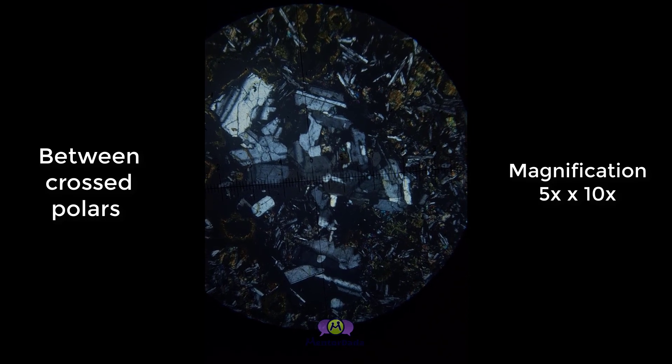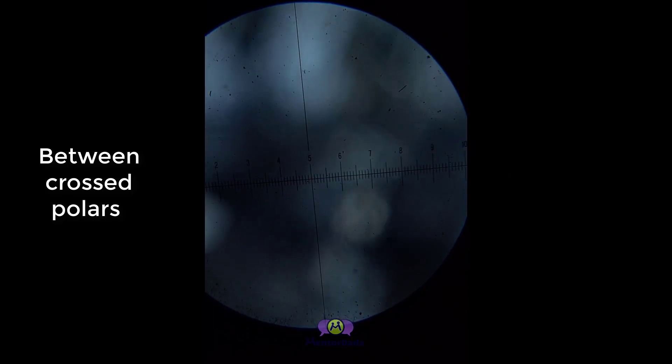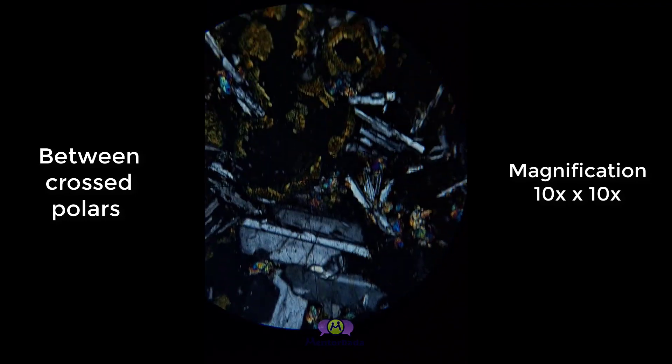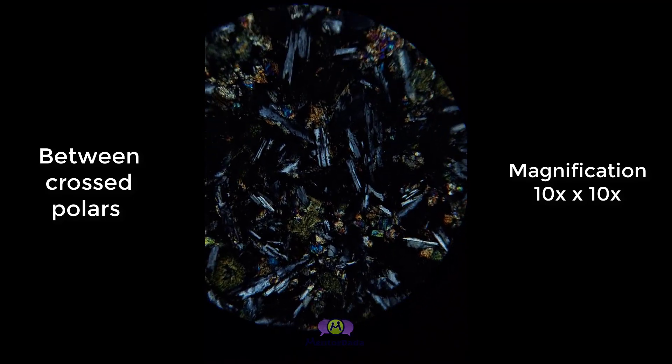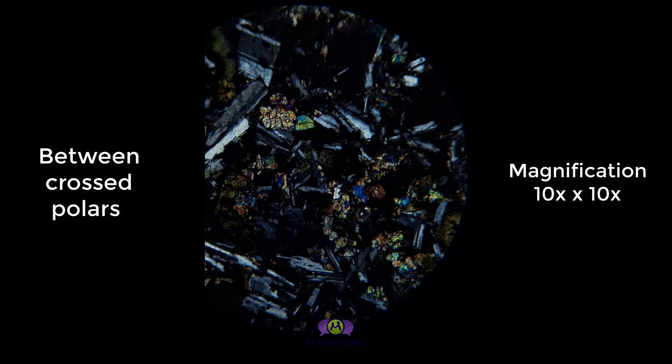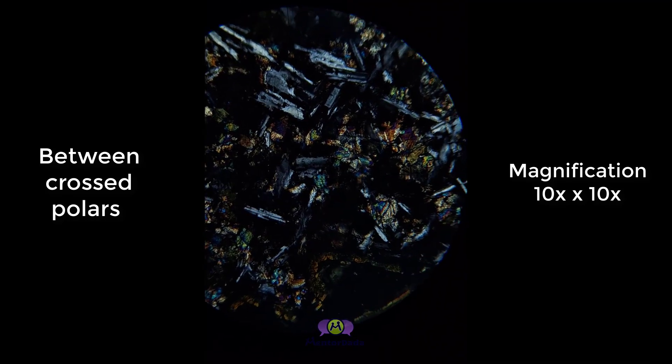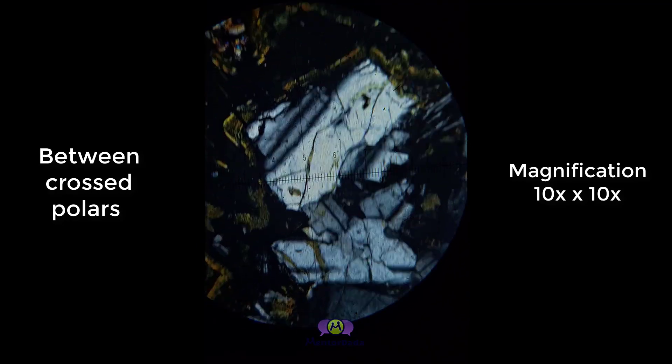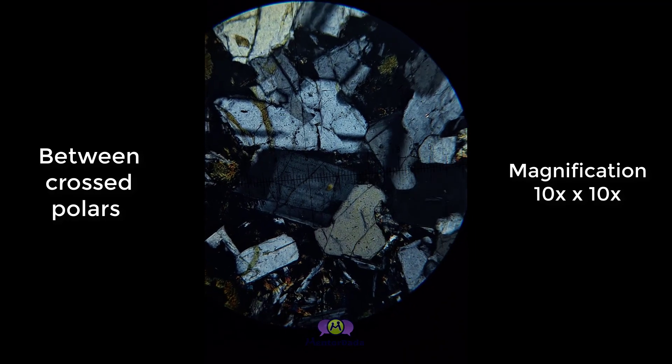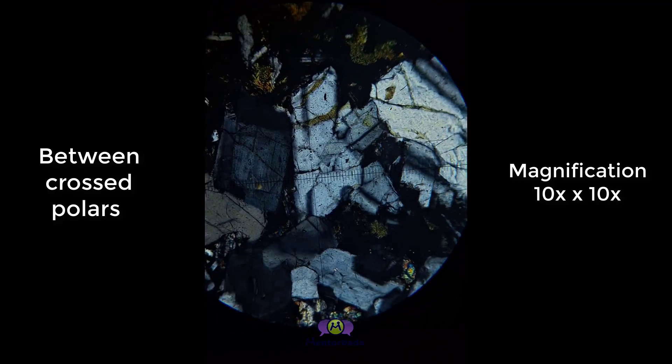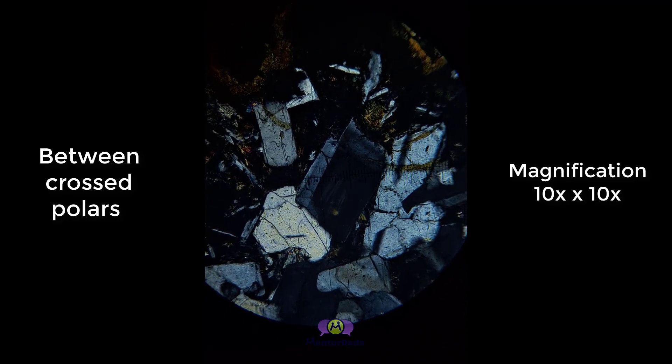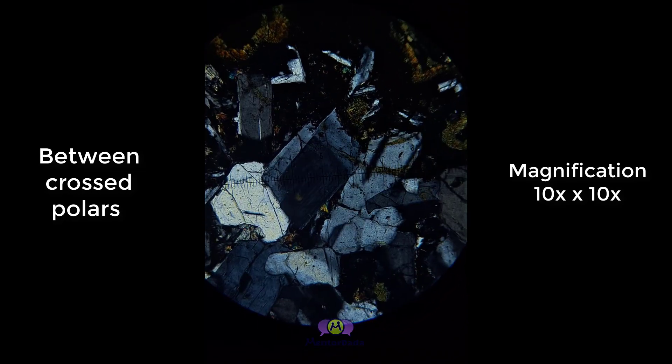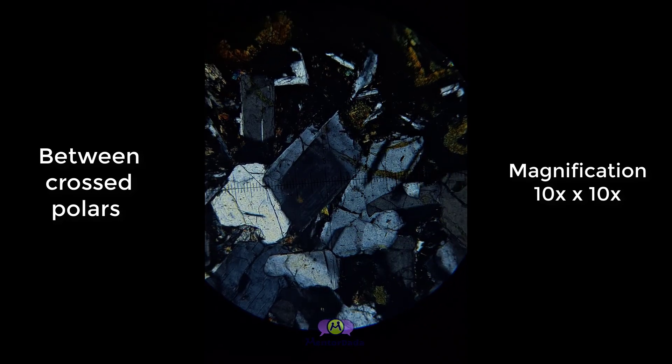Now 10x magnification has been chosen. You are observing the plagioclase feldspar with the yellow portions which are mainly pyroxenes. At the central part, you are observing a grain of plagioclase showing a zoning effect.